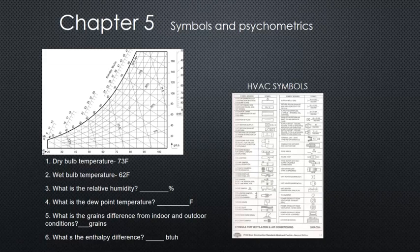Chapter five teaches you how to use a psychrometric chart to determine the properties of air. In addition, you'll learn to determine the health and capacity of an air conditioner using a psychrometer. Also included is a table of the symbols used on mechanical drawings.